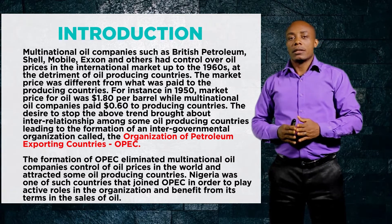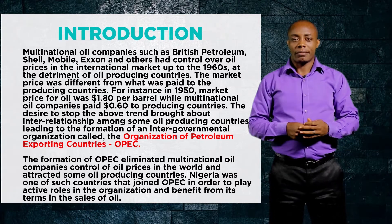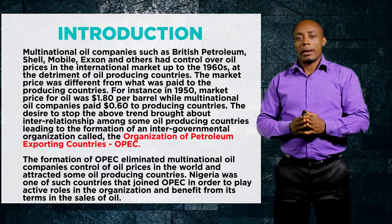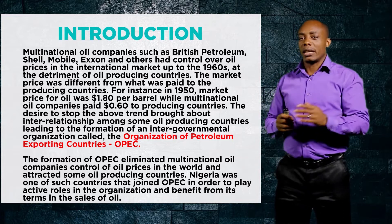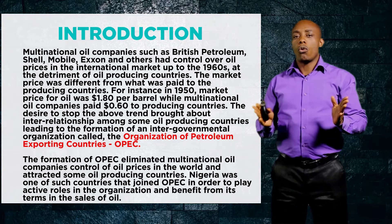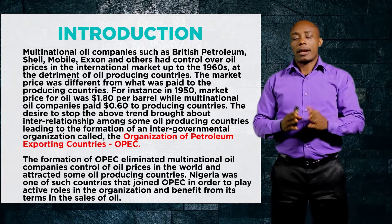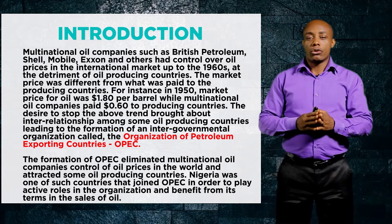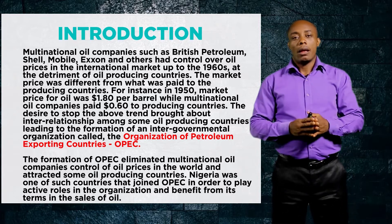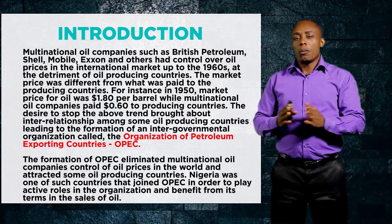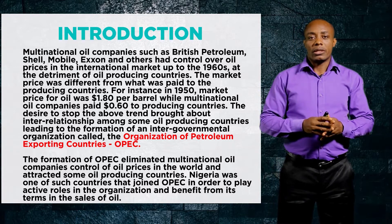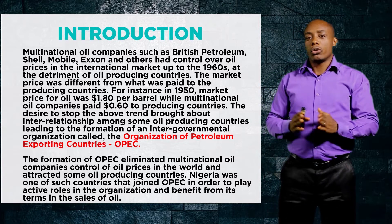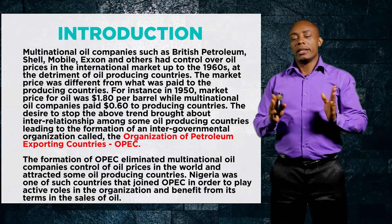OPEC simply means Organization of Petroleum Exporting Countries. Oil production is undertaken by companies called multinational companies because they are owned by two or more countries. Some examples are British Petroleum, Shell, Exxon, and Mobil. These multinational companies were in charge of oil production and were controlling the prices of oil in the international oil market.